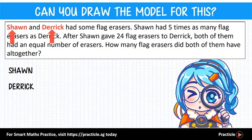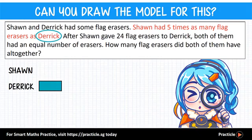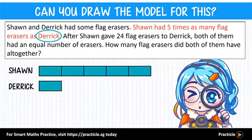Remember to simplify the question by breaking it into shorter sentences. Sean had 5 times as many flat erasers as Derek — so who has more flat erasers? Sean, correct. Let's start by drawing 1 unit to represent the number of flat erasers that Derek has. If Derek has 1 unit, Sean would have 1 multiplied by 5, which is 5 units.